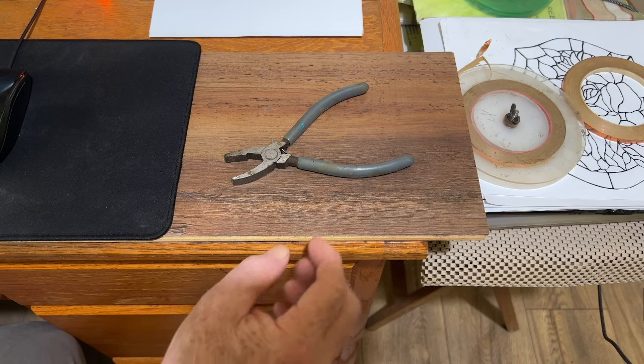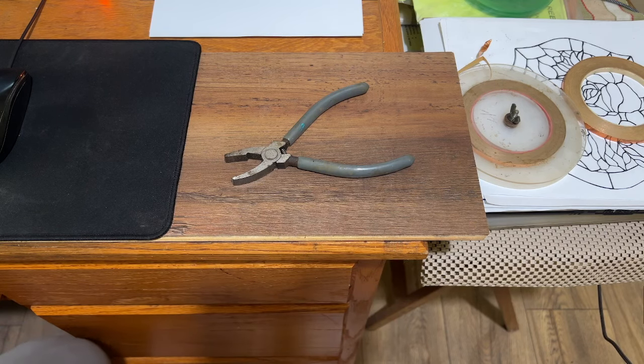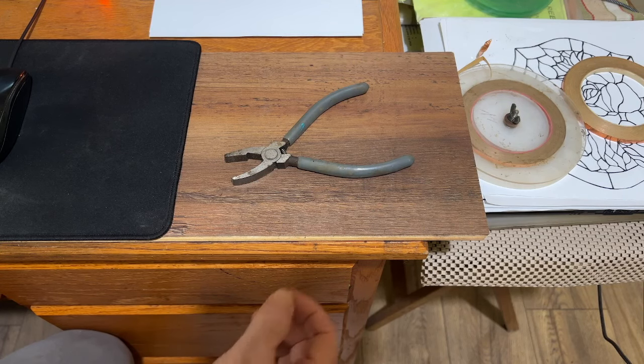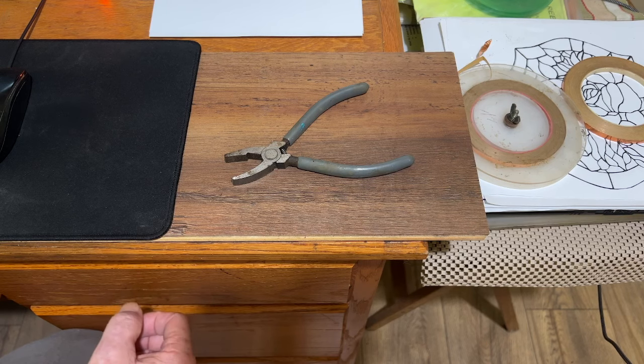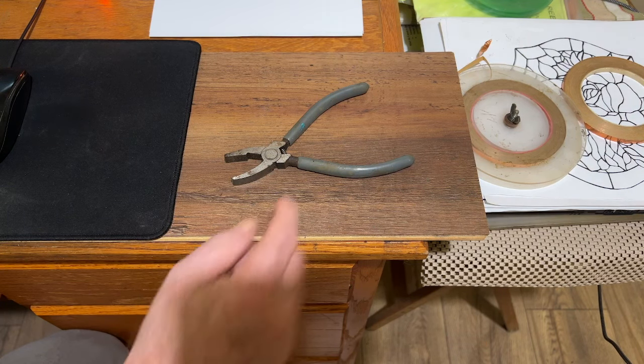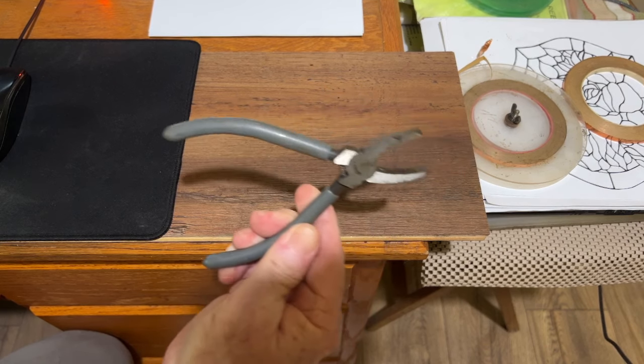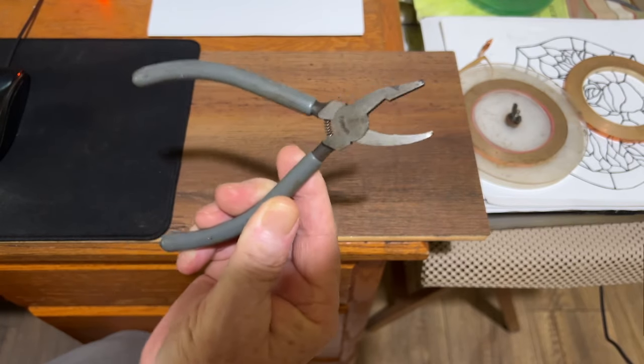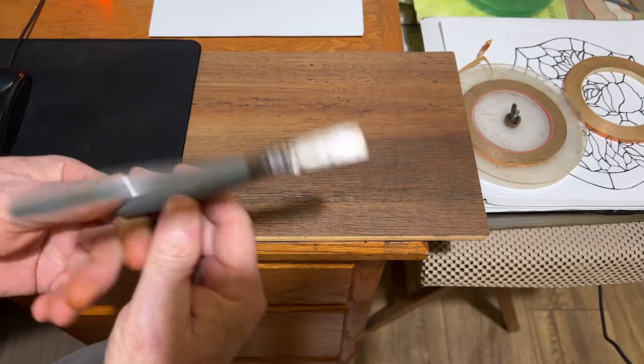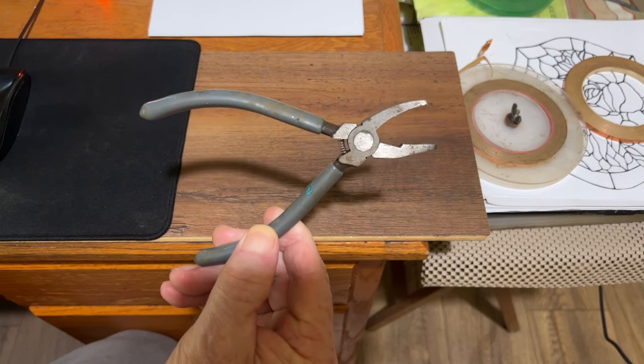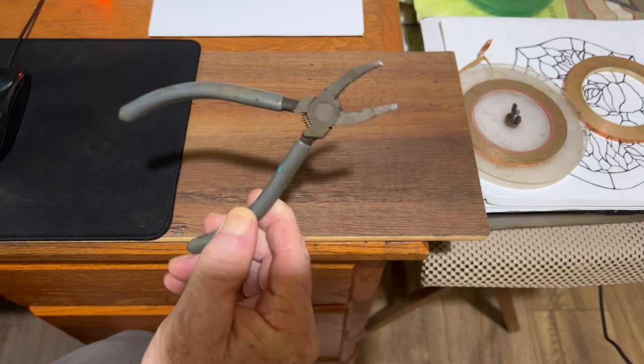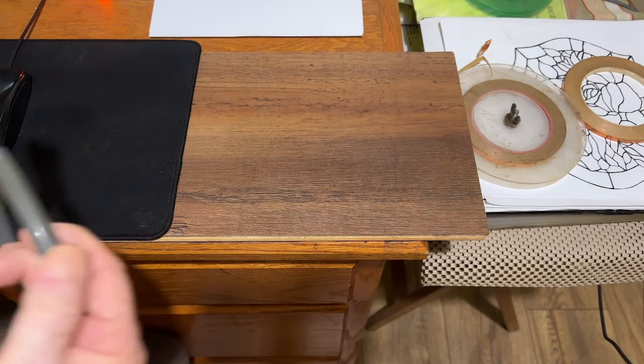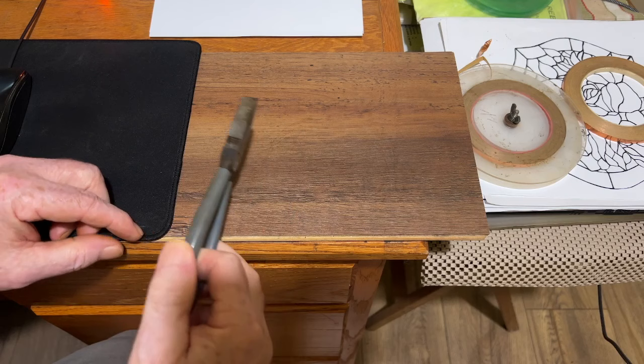Okay, welcome back to my stained glass channel. Today we're looking at a common tool. These are called breaker-grouser pliers, pretty straightforward. They're used to break areas of scored glass away from the desired piece.